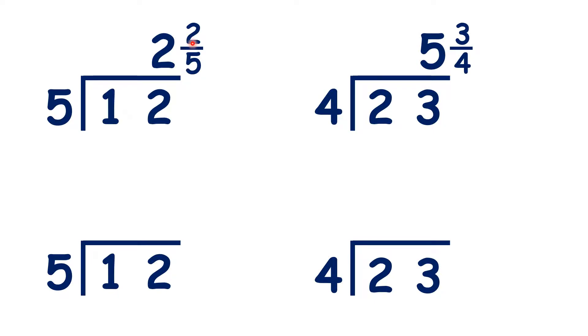So we know how to write remainders as fractions. The remainder is the numerator and the divisor is the denominator. Now we're ready to learn how to write remainders as decimals.